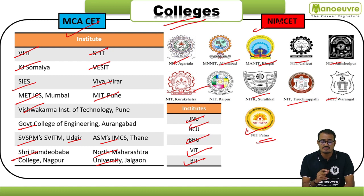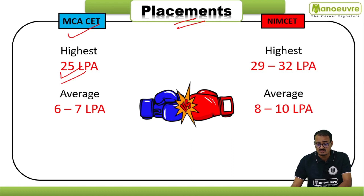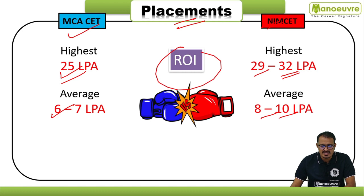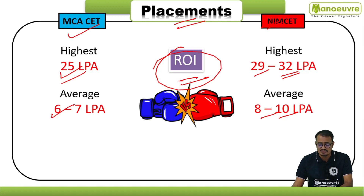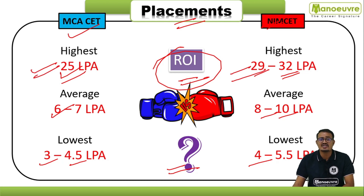Both are well-established institutes with different fee structures. Regarding placements for MCA CET colleges: highest package is 25 LPA at top institutes, average is 6 to 7 LPA. For NIMCET/NIT colleges: highest package is 29 to 32 LPA, average is 8 to 10 LPA. The lowest packages are 3 to 4.5 LPA for MCA CET and 4 to 5.5 LPA for NIMCET. You will get the best ROI from NIT and other top institutes.